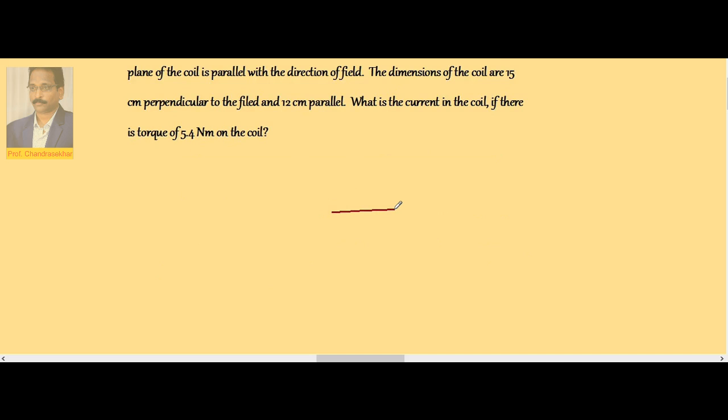Let us assume this is a rectangular coil. According to the data, 15 cm is perpendicular to the field. So first let us consider field direction. If I take this as field direction, then 15 cm is perpendicular. So this side is 15, this side is 12 cm.